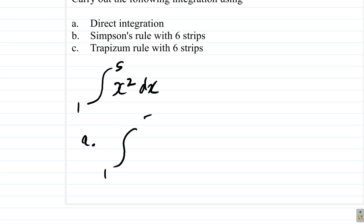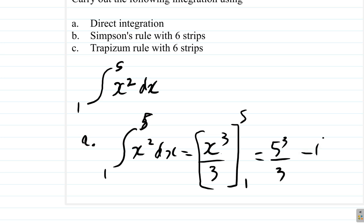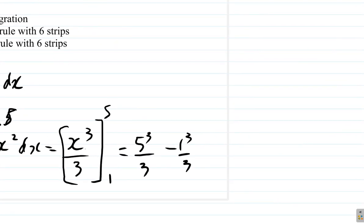We're integrating from 1 to 5 of x squared dx. That will give us x cubed divided by 3 from 1 to 5. That will be 5 cubed over 3 minus 1 cubed over 3.